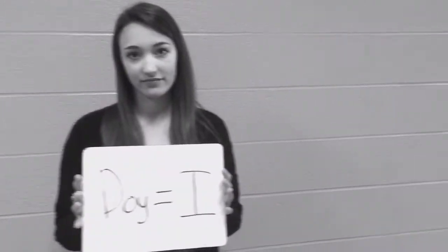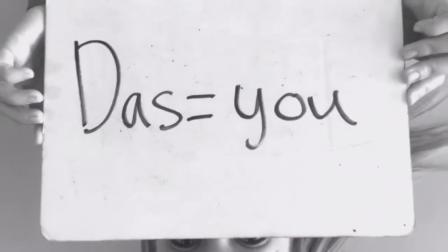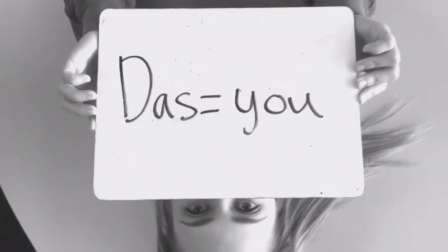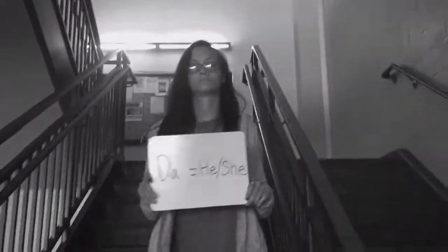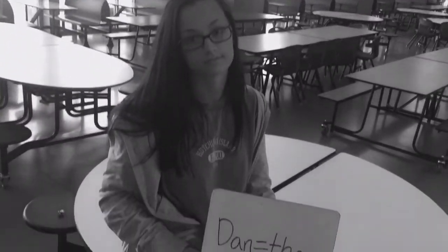Doi is used for I, and das is in the you form, next da is for he, she, and almost is for we. Lastly, then is for they, and then the chart is finished. Keep writing charts and saying verbs and you'll never be failing.